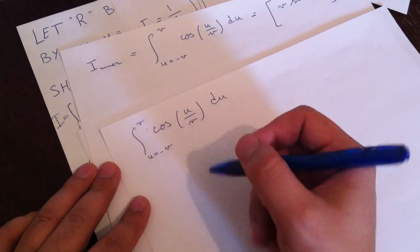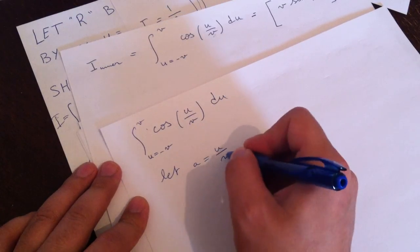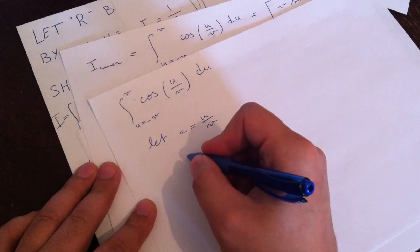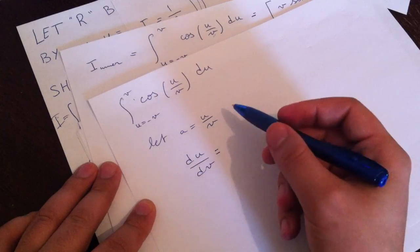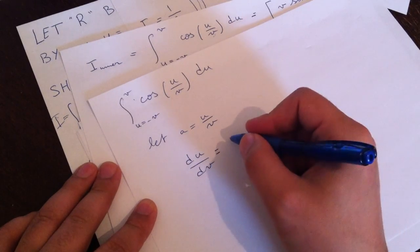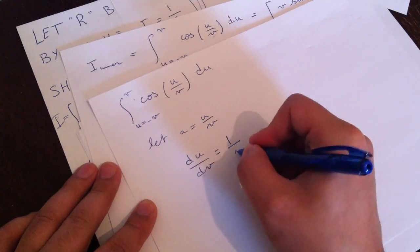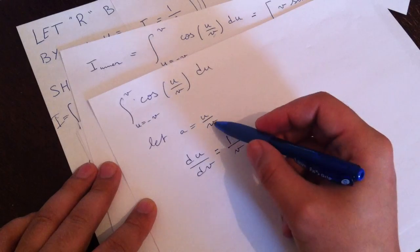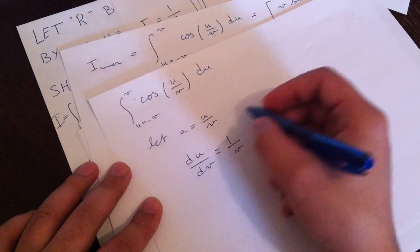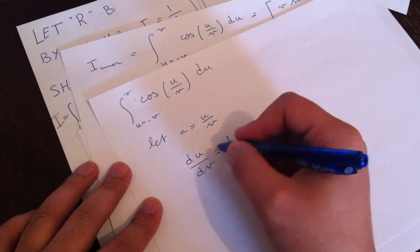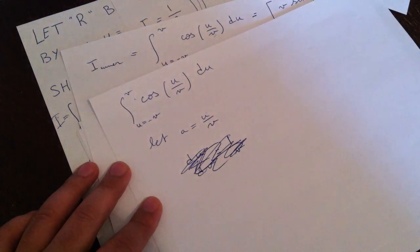To evaluate this integral, we use the substitution a equals u over v, so da equals 1 over v du, meaning du equals v da. Then we integrate cos(a) and substitute back. This gives us v times sine(u/v), evaluated from u equals minus v to u equals v.